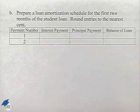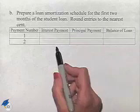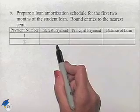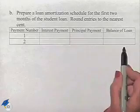Round entries to the nearest cent. We're going to figure out our first two payments, we're going to determine our interest payment, our principal payment, and the balance of the loan.